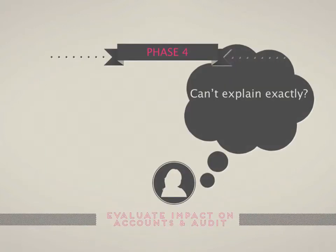In phase four, you evaluate the impact on the audit. If management can't explain why cost of sales are so high, you need to worry — if they can't explain it, that suggests internal controls aren't very good and they're not on top of their business. That means you need to do more work across probably all areas, evaluating the impact on the accounts and the audit as a whole.